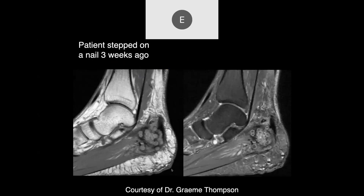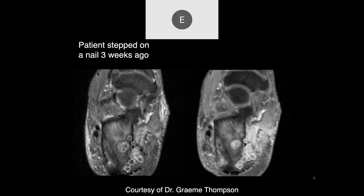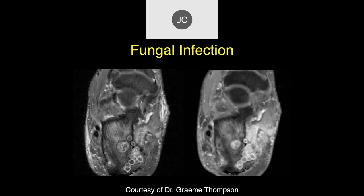A patient who stepped on a nail three weeks ago. In the medial posterior soft tissues, there's a very unusual circular signal — little bullseye-like patterns all through the tissue. This was all due to infection. This is a fairly characteristic appearance of fungal infections — I've never seen this in a regular bacterial infection. It probably also happens with actinomycosis and some atypical bacterial diseases, but it's pretty characteristic of fungal infections.